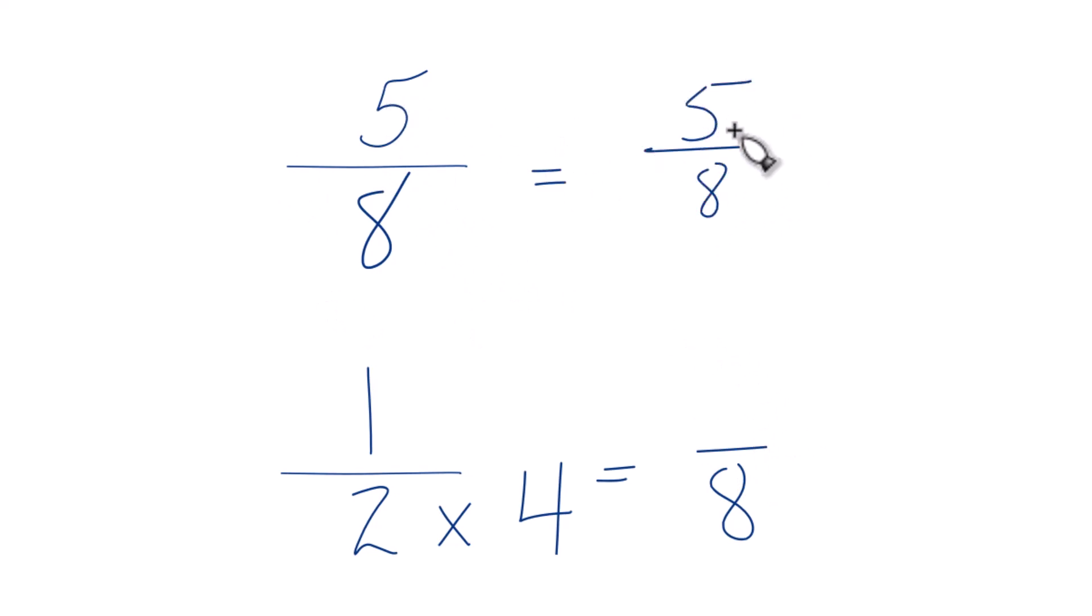And then down here, because I multiplied the denominator by 4, I need to multiply the numerator by 4 as well. It's because 4 over 4, that equals 1, just multiplying by 1, doesn't change anything.